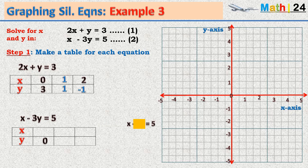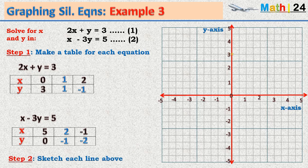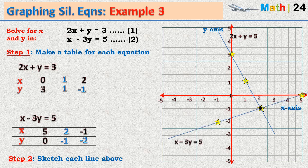For the second equation: if y equals zero, x equals five; if x equals two, two minus three y equals five so y equals minus one; if x equals minus one, minus one minus three y equals five so y equals minus two. We plot the points (0, 3), (1, 1), (2, −1) for the first equation and (5, 0), (2, −1), (−1, −2) for the second. These two equations intersect at the point where x equals two and y equals minus one.